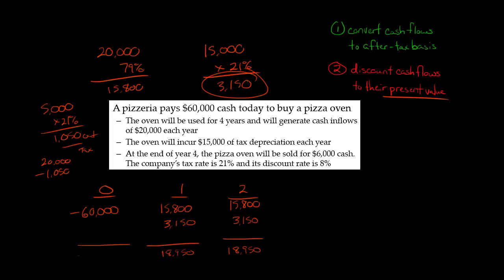For period zero, I should have wrote negative $60,000. So these here are after-tax cash flows. Remember I said that's the first step we're going to do, convert to an after-tax basis. And then for the third period, we have the same thing, $15,800, $3,150, and then that gives us $18,950.